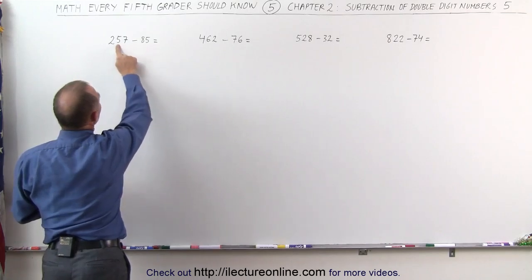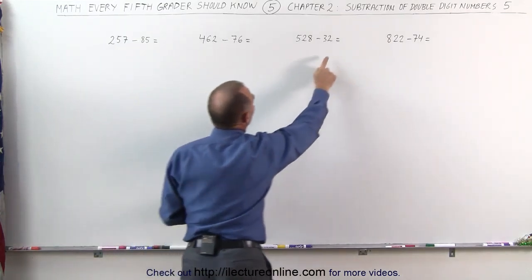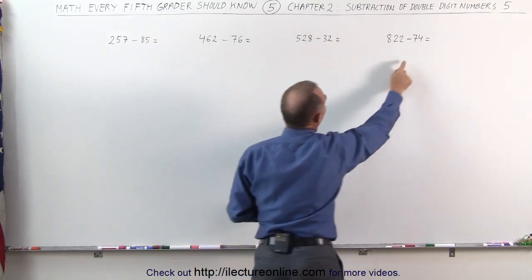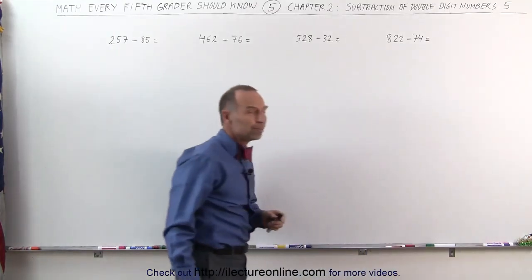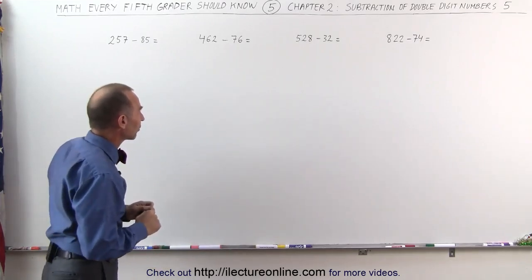Notice that 85 is bigger than 57, 76 is bigger than 62, 32 is bigger than 28, and 74 is bigger than 22. So how do we do that? Well there's some various techniques, but I'll show you some very nice little tricks.